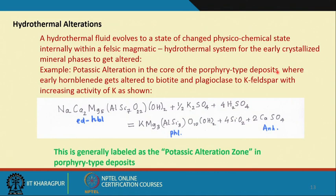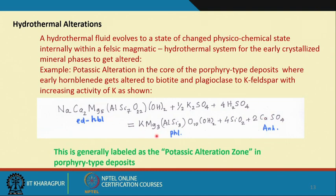Such reactions can also be written for calcium. The reaction proposed is for conversion of hornblende — specifically an edenitic hornblende — acted upon by a potassium-rich fluid in the core of the hydrothermal system. The pH of the fluid is such that we are in the sulfate stability field. This reaction is proposed for conversion of hornblende to biotite in the potassic alteration zone typically seen in the core of the porphyry copper deposit. Importantly, this reaction also gives rise to calcium sulfate — anhydrite.